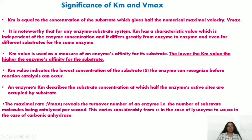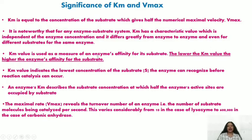Km differs greatly from enzyme to enzyme and even for different substrates of the same enzyme, because Km reflects the affinity of binding with the substrate — if the substrate is different, Km is different. Third, Km value is used as a measure of the enzyme's affinity for its substrate, but lower the Km value, higher the affinity for the substrate.